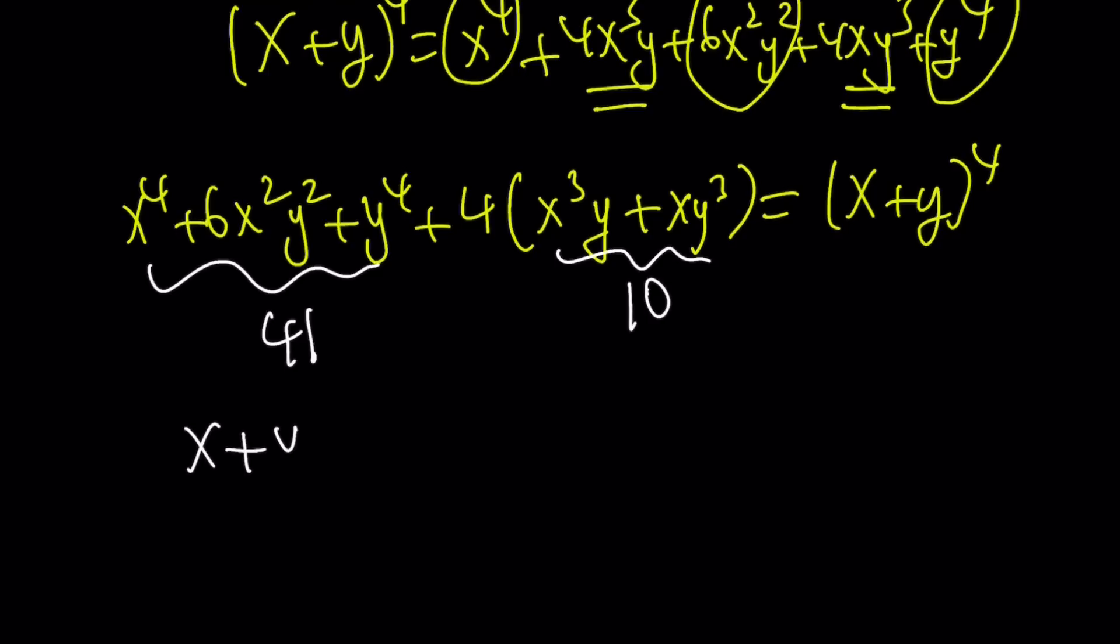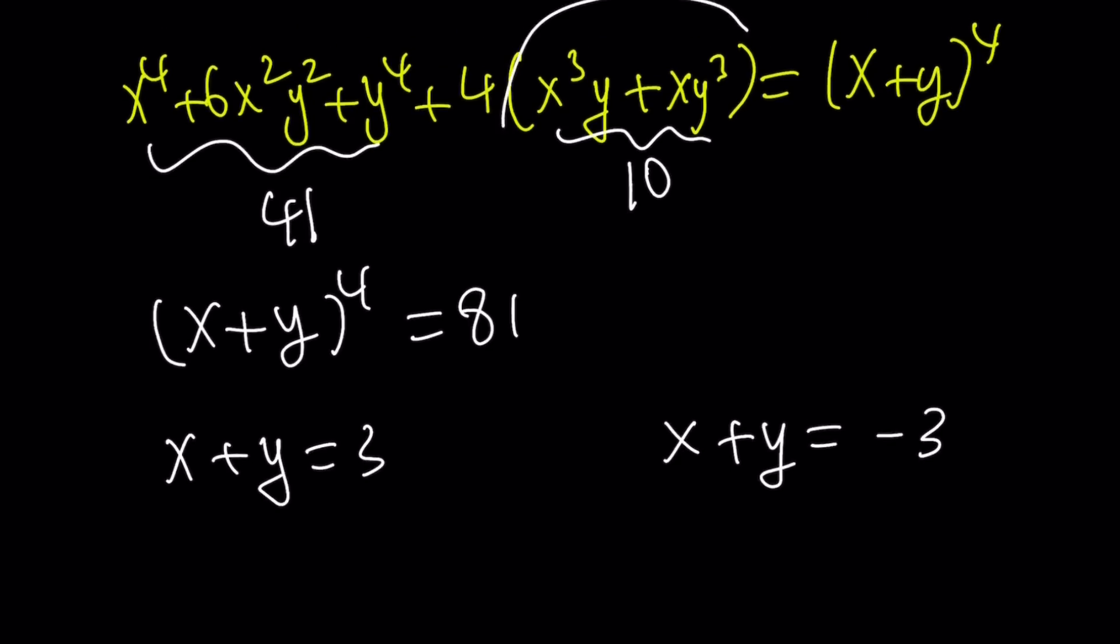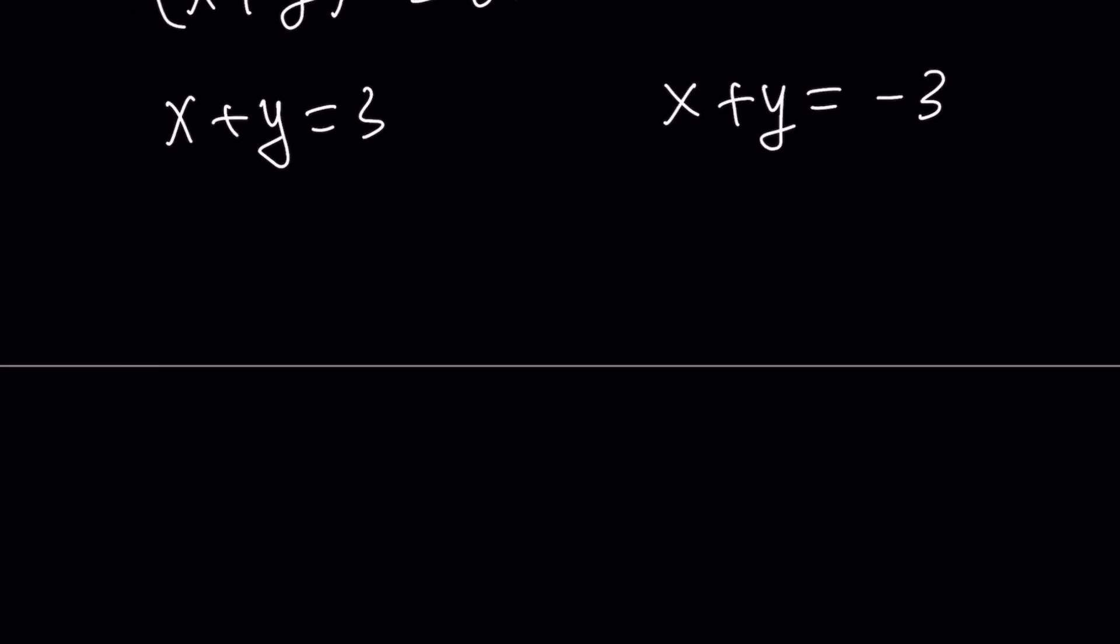Okay, cool. So, 41 plus 4 times 10 is 81. So, from here, we get x plus y to the fourth power is 81, which implies two things. Either x plus y is equal to 3 or x plus y is equal to negative 3. In the real world, again, we're looking for real solutions here. But we could also find the complex solutions. I'll tell you how to do that. But basically, this is what you get from here. Now, how can I proceed with the solution? Well, I do know that x cubed, y cubed, so this part here, this stuff, is equal to 10.